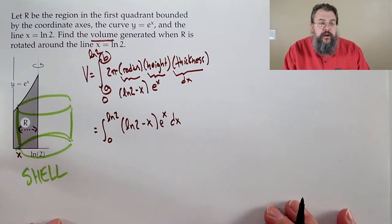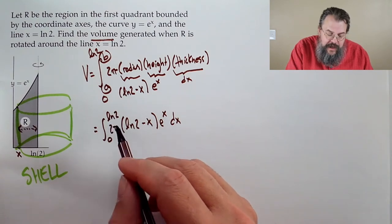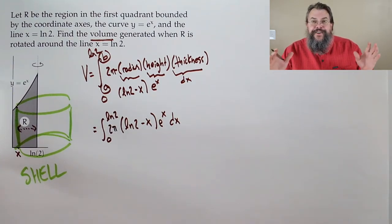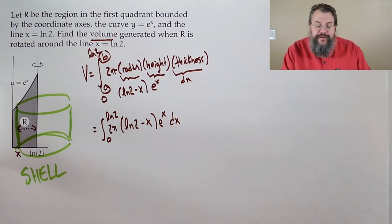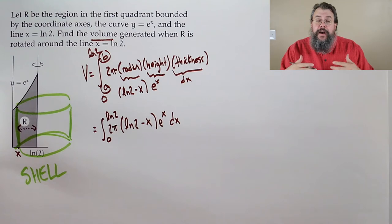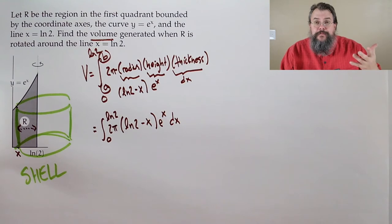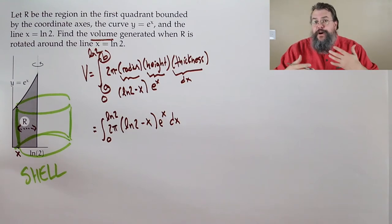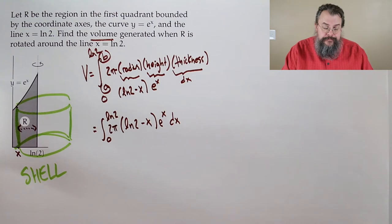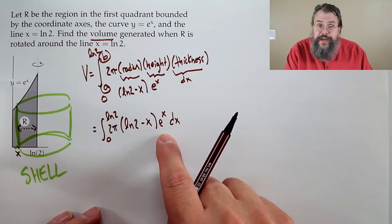Now we have to integrate. The volume formula helped us set up, but now it starts to feel like integration by parts. We see two things multiplying: e to the x — which you can integrate or differentiate and it's always e to the x — and a polynomial. Log two is just a number, so it's some number minus x.